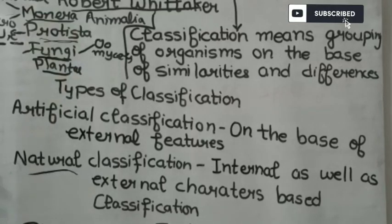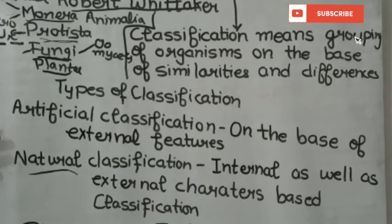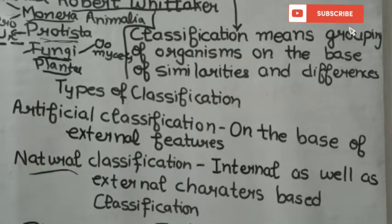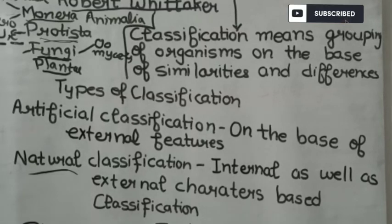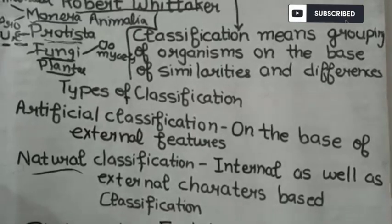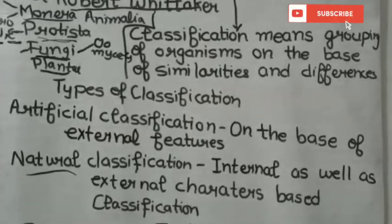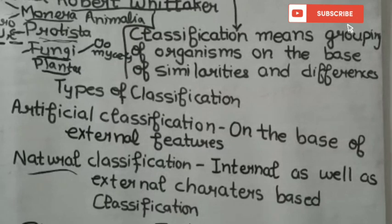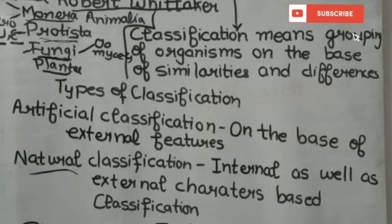Classification is further divided into three types: Artificial classification, which is based on external features only; Natural classification, which is based on both internal and external characteristics; and Phylogenetic classification, which is based on evolutionary relationships and the ancestors of organisms.